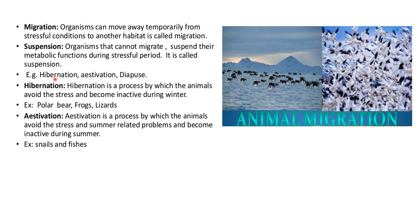Examples of suspension include hibernation, a process by which animals avoid stress and become inactive during winter — for example polar bears, frogs and lizards. Estivation is a process by which animals avoid stress and become inactive during summer — for example snails and fishes.